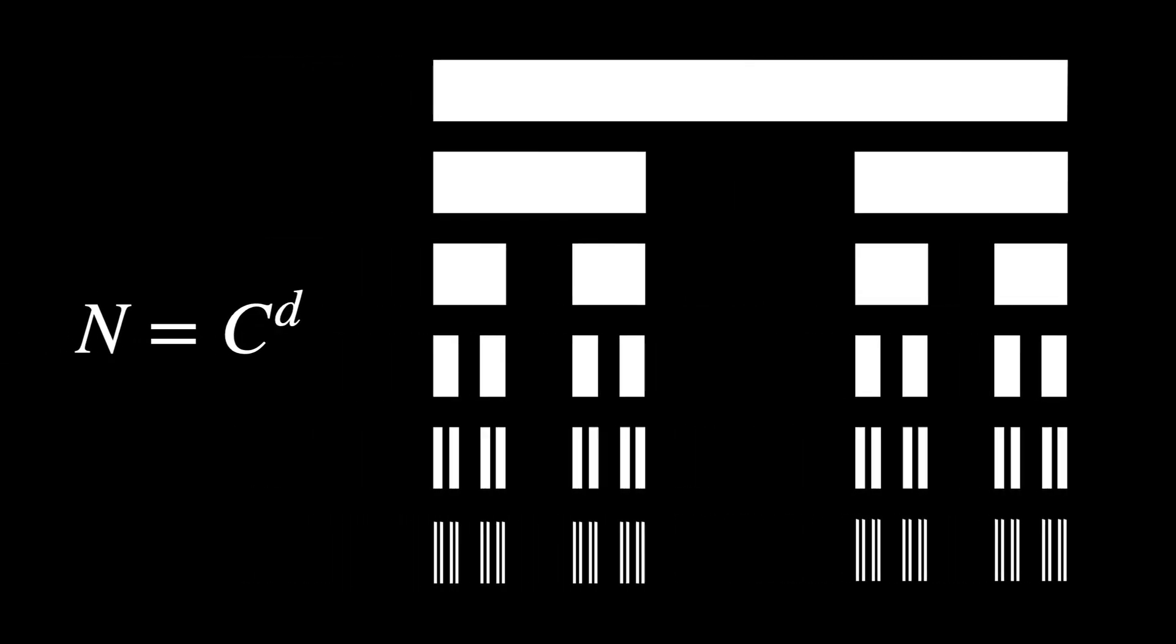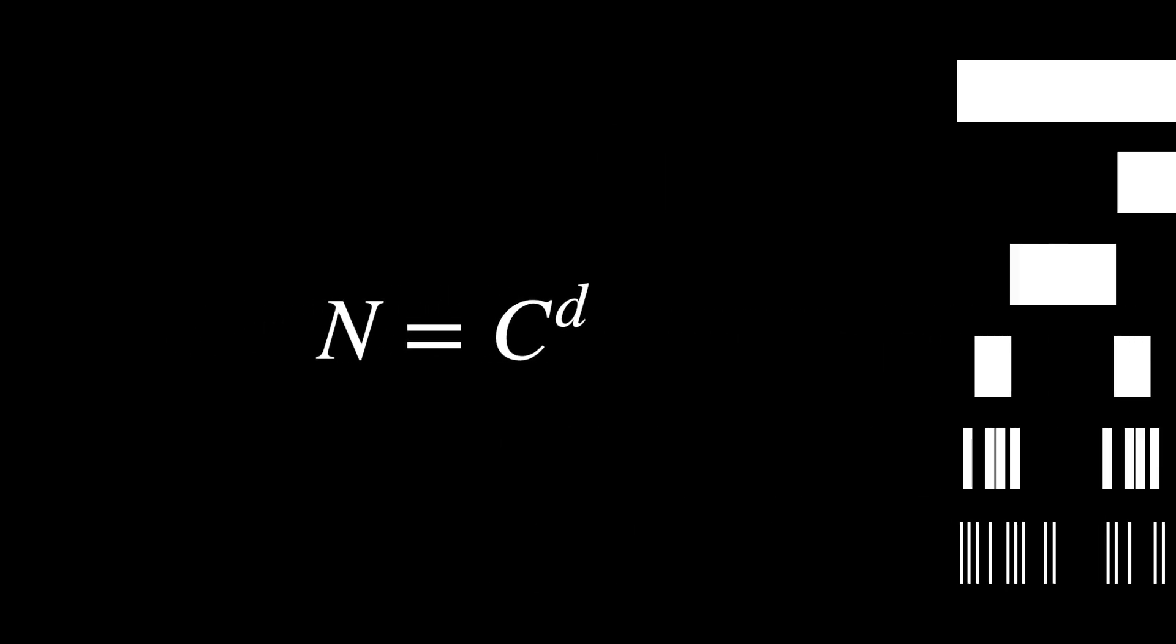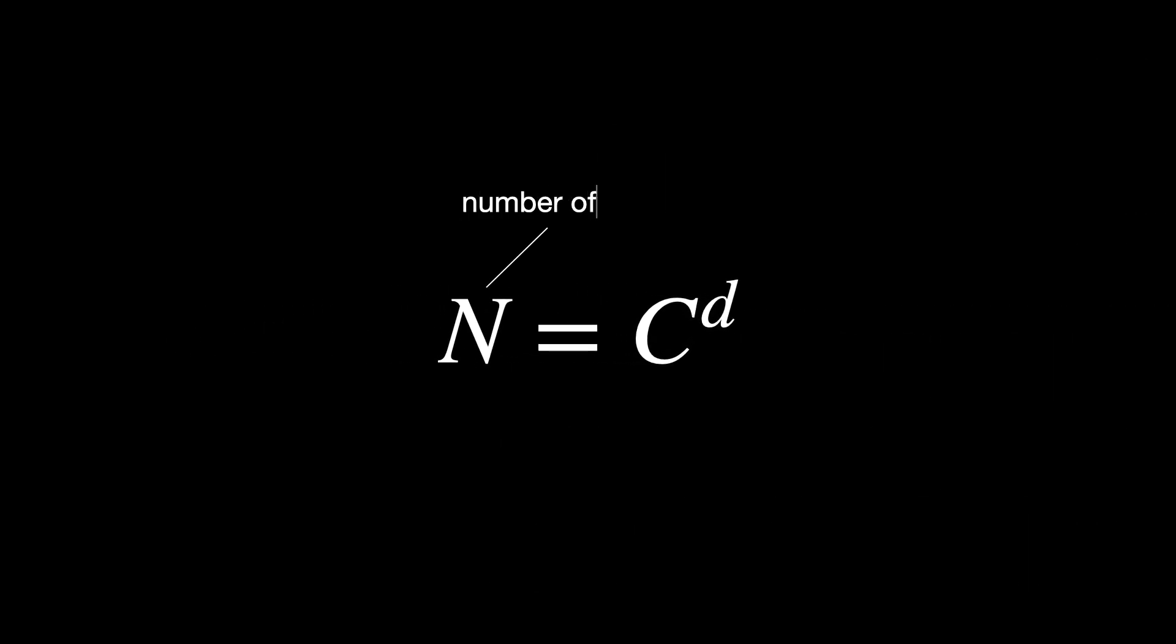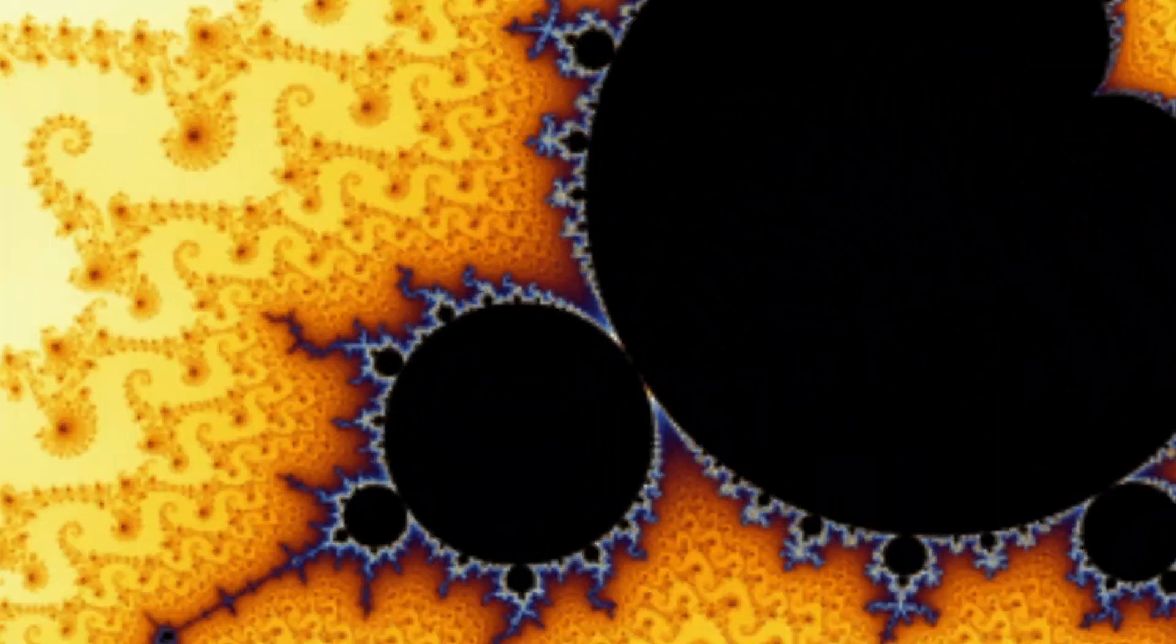To figure out the dimension of the Cantor set, we analyze its scaling behavior using the formula for fractal dimension d. N equals c to the power of d. N is the number of pieces or intervals. C is the scaling factor, how much smaller each piece becomes. The point is that, by analyzing how the number of pieces and their sizes change during scaling, we can compute dimension, even for sets that are highly fragmented, like the Cantor set.